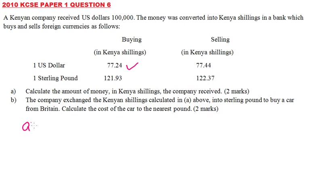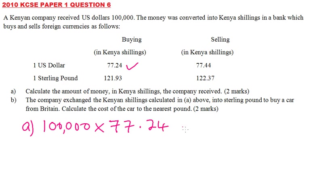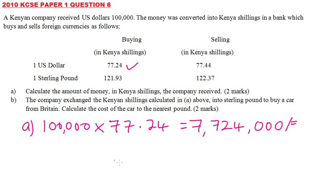So at part A, we have 100,000 dollars. You multiply by the buying price, which is 77.24, and this gives you 7,724,000 Kenyan shillings.